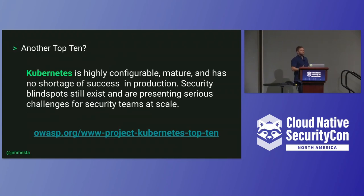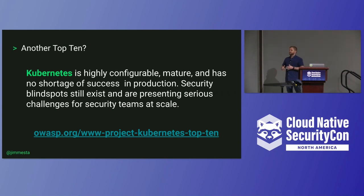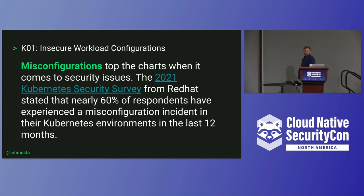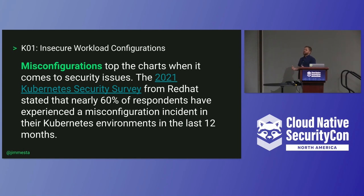We know what Kubernetes is. We came to this inflection point where it's getting complicated, and every day that complication adds more security problems. The top 10 is a reference guide — it is not gospel, it is not something you have to follow. Kicking things off with number one: in most things in cloud, misconfigurations bite us all of the time. The famous Red Hat security survey basically says everyone's dealing with these things all of the time, which is why it makes the very top of the top 10.